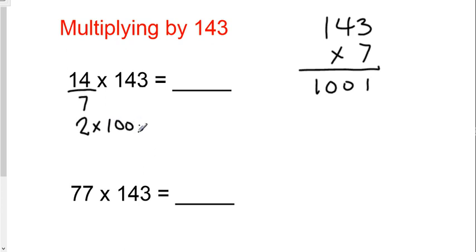1,001. Then all I have to do is use my 1001 trick, which means 1,001 times 2 is 2,002. So once again, 143 should bring to your mind 7. Divide this number by 7 and multiply it by